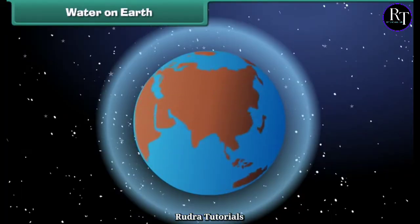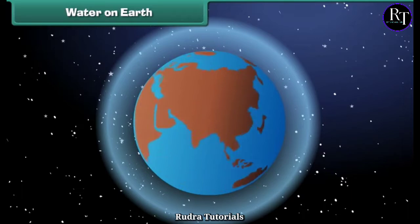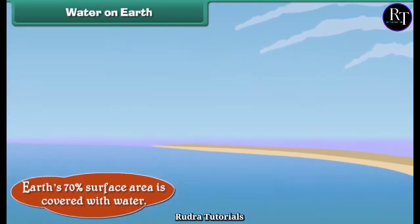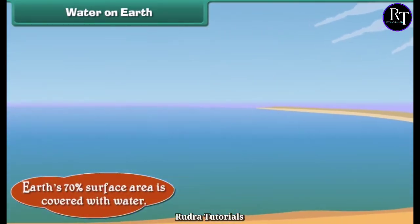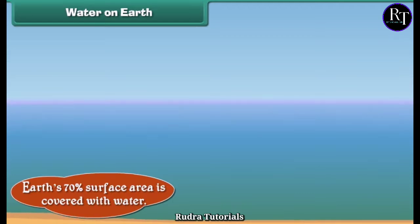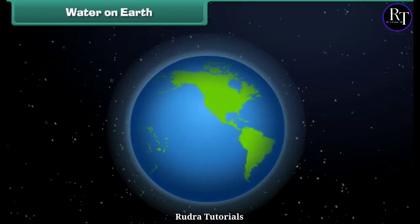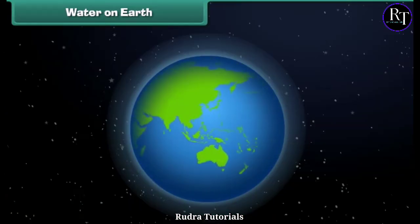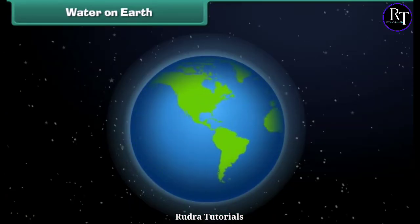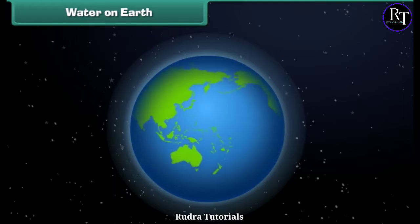Water is the most abundant substance present on Earth. In fact, Earth's 70% surface area is covered with water. Do you know Earth is also called the blue planet? Because when seen from space, it appears blue due to water.